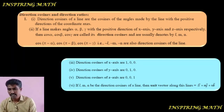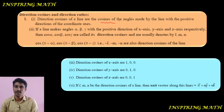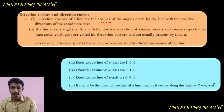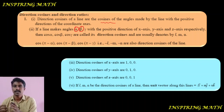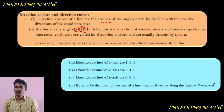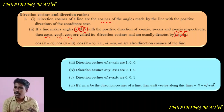Direction cosines and direction ratios. Direction cosines of a line are the cosines of the angles made by the line with the positive direction of coordinate axes. The angle with the x-axis is denoted alpha, with the y-axis beta, and with the z-axis gamma. Therefore cos α, cos β, cos γ are the direction cosines, usually denoted by l, m, n.